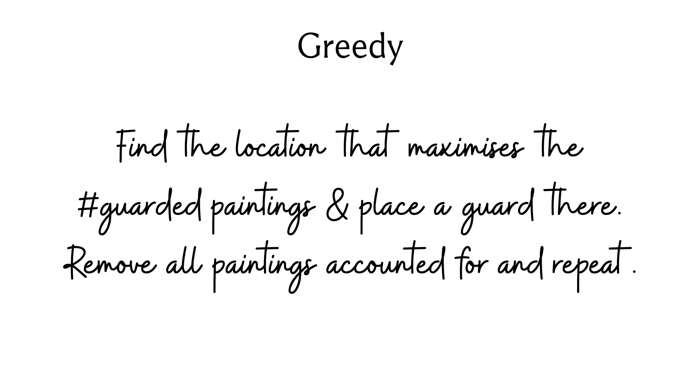Here is an example with n equals 8 - we have 8 paintings at various locations, and the visibility range of the guards is 3, so k equals 3.